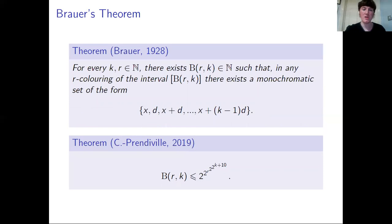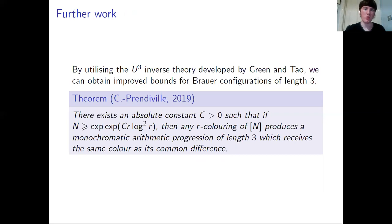Going back to the general bound in Brouwer's theorem, it is double exponential in some large power of the number of colours r. For k equals 3, we improve this to double exponential in r log squared r, so we bring this large power of r down to almost one. This is almost exactly at the double exponential barrier, which seems to be the limit of current methods.